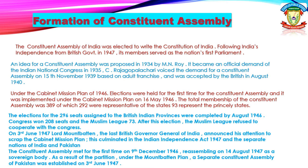The elections for the 296 seats assigned to the British Indian provinces were completed by August 14, 1946. Congress won 208 seats and Muslim League 73. After this election, the Muslim League refused to cooperate with the Congress.